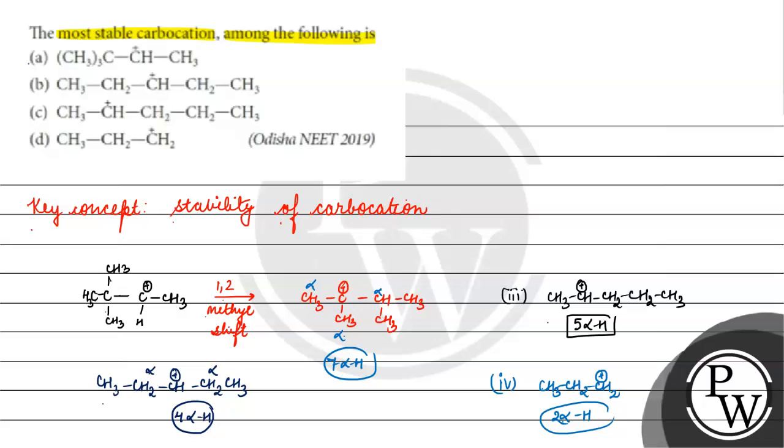So the answer for our question will be the option with maximum number of alpha H. It has maximum hyperconjugating structures and maximum stability. I hope you understood well. Thank you, all the best.